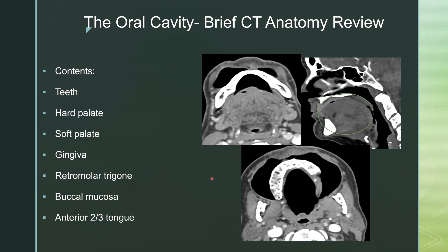A brief review of the CT anatomy of the oral cavity. The contents are the teeth, the hard palate, the soft palate, the uvula, the gingiva — which is along the surface of the bone — the retromolar trigone, which is that space between the mandible and the maxilla pointing posteriorly, the buccal mucosa, and the anterior two-thirds of the tongue.